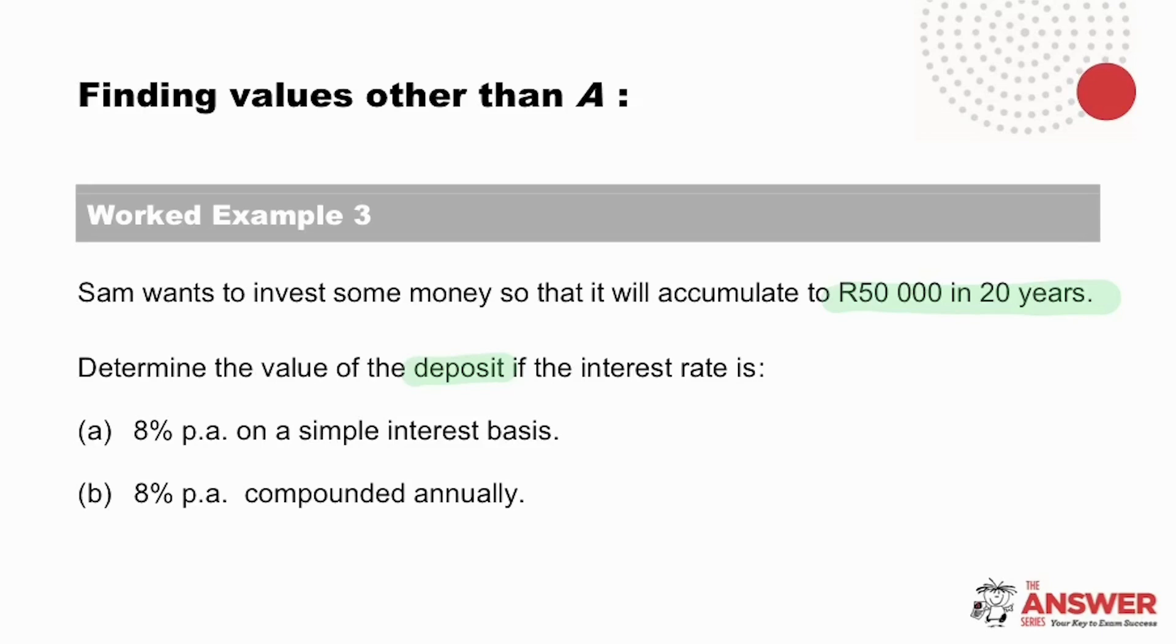Looking at the question, what is important here is to see that the 50,000 is an amount in the future. In other words, the amount we've been asked to find is the amount that he needs to deposit now. Which means in each scenario, A and B, we've been asked to find P. Scenario A is if the interest rate is calculated at 8% per annum on a simple interest basis. And Scenario B is if the interest rate is calculated at 8% per annum compounded annually.